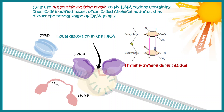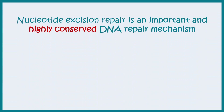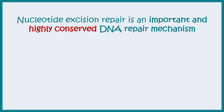UvrA, UvrB, and UvrC are proteins that can help our body recover from UV-mediated DNA damage. In this video we are going to talk more about these proteins and how exactly they function. Nucleotide excision repair system is highly conserved throughout species.